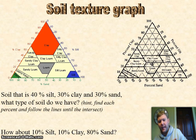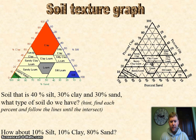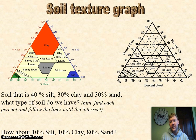Soil texture graphs — they look complicated but they're not. The two graphs at the top are exactly the same; one is color-coded and one has the actual lines to help you follow and figure out the type of soil you have. Sand, silt, and clay are all on there, going from zero to one hundred percent on each side of the triangle.